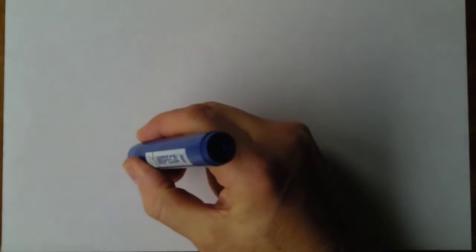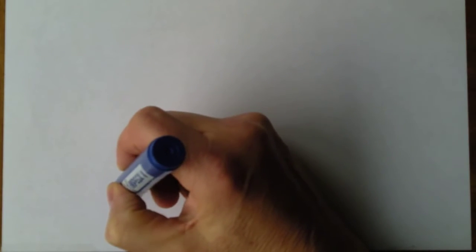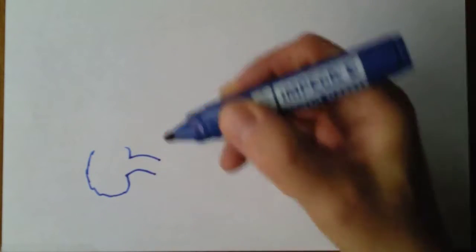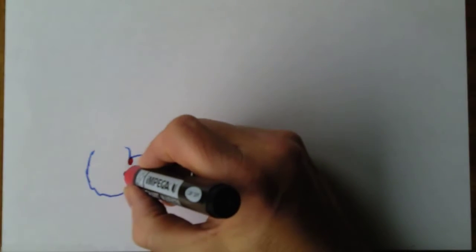Now the last part of the small intestine is the ileum and this goes into the first part of the large intestine which is the cecum. So this would be the ileum here, and there's actually a valve-like structure between the ileum and the cecum. So this is the cecum here, this first bit.